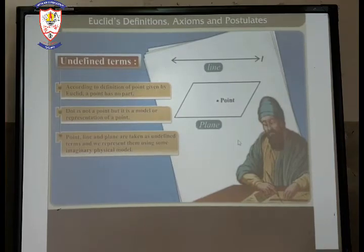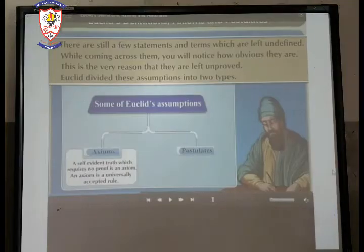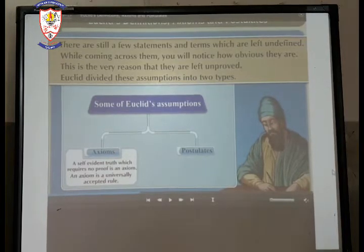Now students, I am going to explain you some undefined terms. According to definition of point given by Euclid's, a point has no part. Dot is not a point but it is a model or representation of a point. Now, point, line and plane, they are taken as undefined terms. And we represent them using some imaginary physical model. There are still a few statements and terms which are left undefined. While coming across them, you will notice how obvious they are. This is the very reason that they are left unproved.